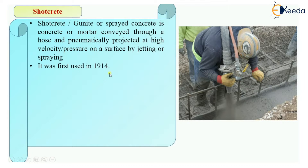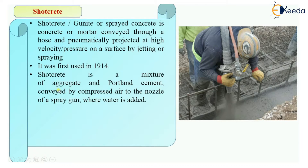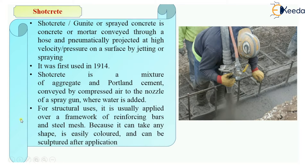It was first used in 1914. Shotcrete is a mixture of aggregates and Portland cement which are conveyed by compressed air — pneumatically — to the nozzle of a spray gun. Water can also be added at the spray gun, that is at the end portion. For structural purposes, it is applied over a framework of reinforcement bars and steel mesh.